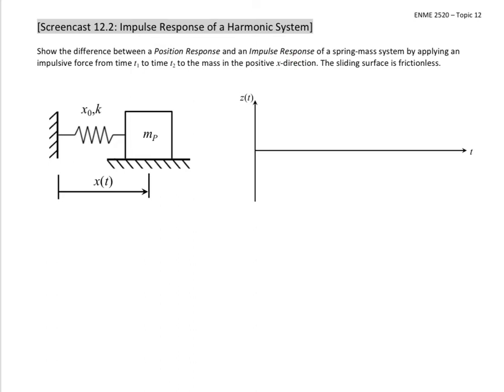As in all systems, let's apply a reference frame. Here we have an inertial reference frame in which e1 is along the positive x direction and e2 would be in the opposite direction of gravity. When we work these oscillatory motion problems, it's good to have your coordinate system set as zero where the system is at rest.